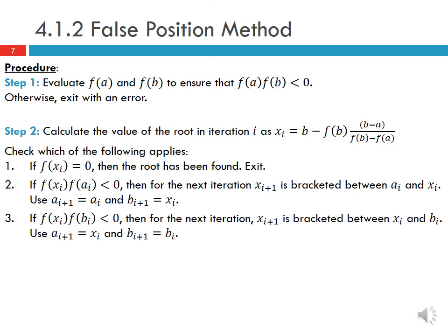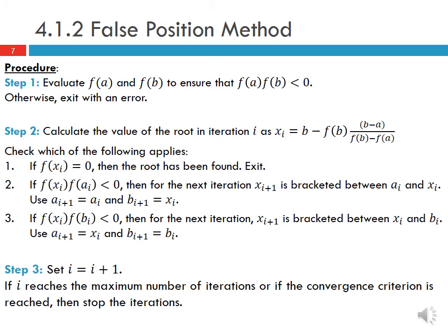Then we check which of the following applies: If f(xi) equals zero, then the root has been found so we exit. If f(xi) times f(ai) is less than zero, then the root is bracketed in the left interval, so we keep ai the same and update our b to be xi. Otherwise, if f(xi) times f(bi) is less than zero, then the root is bracketed on the right side, so we update our a to be xi and keep our b the same.